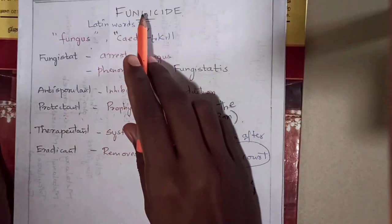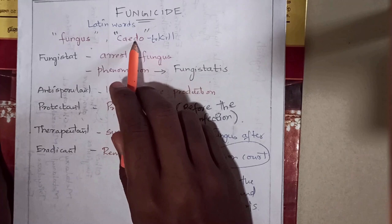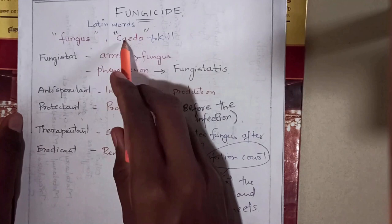The word fungicide is derived from the Latin word fungus and 'cide' means to kill. Fungicide means to kill the fungus. Fungistat refers to the arrest of the fungus.